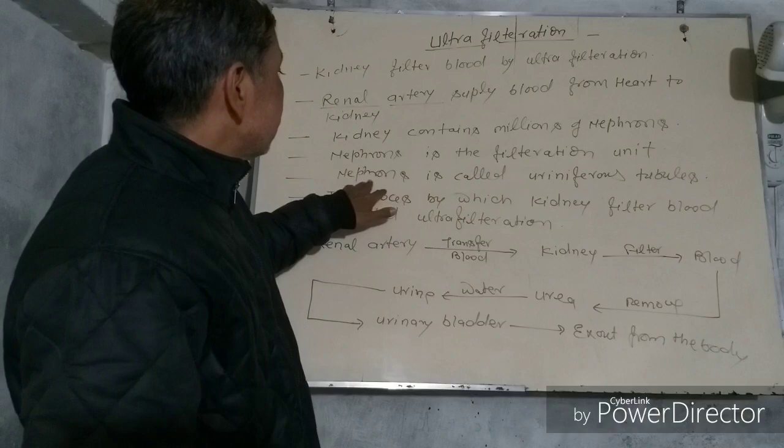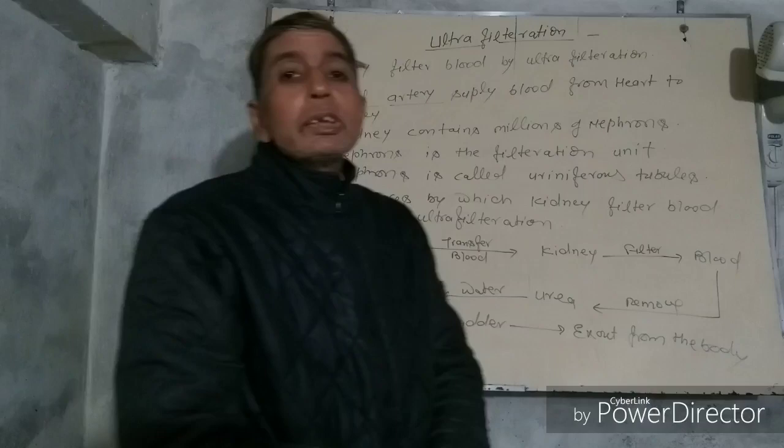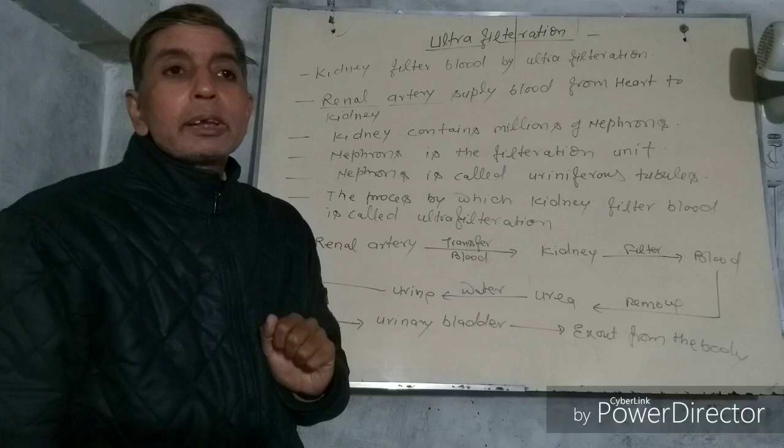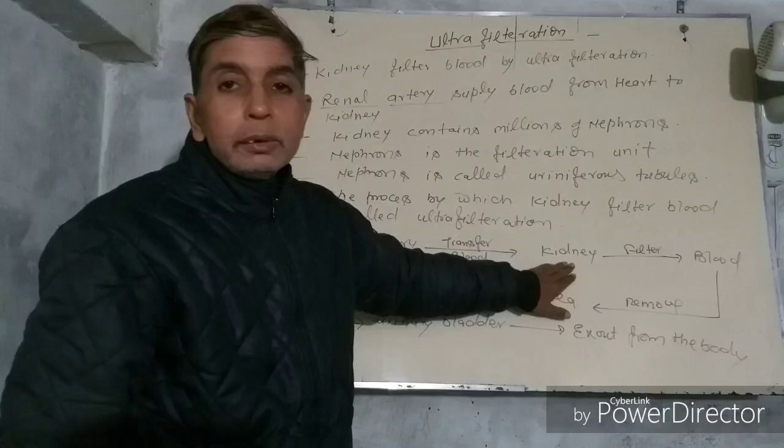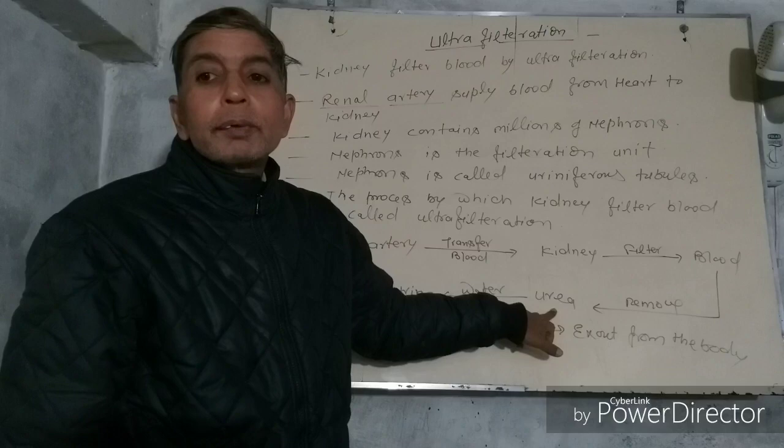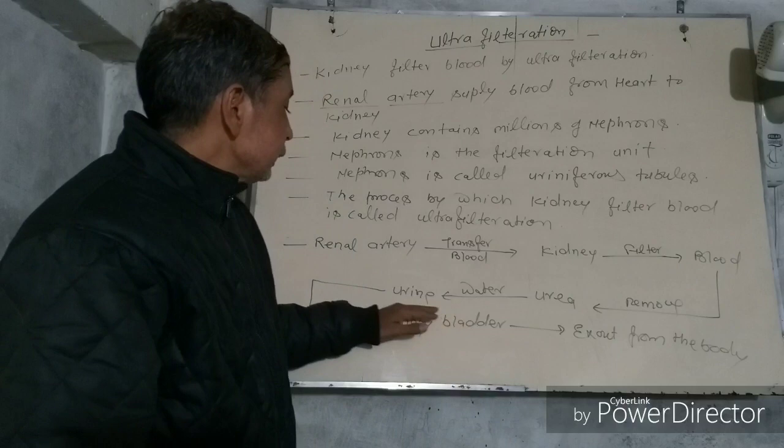The process by which the kidney filters the blood is called Ultrafiltration. The renal artery transfers blood to the kidney. The kidney filters blood and removes the urea. The urea is mixed with water and it is called urine. This urine is filtered by the urinary tubules by filtration.